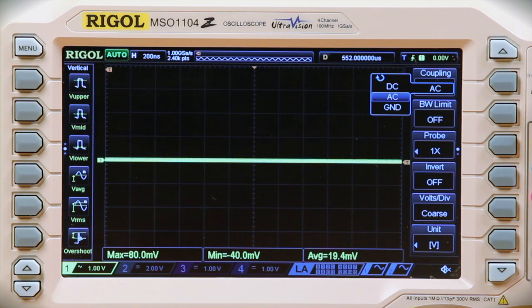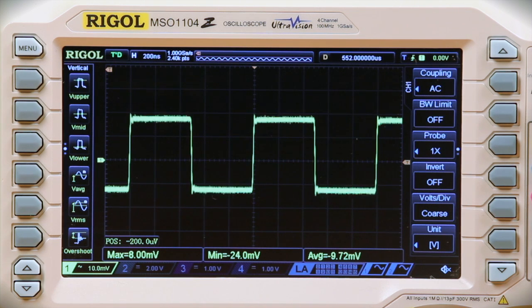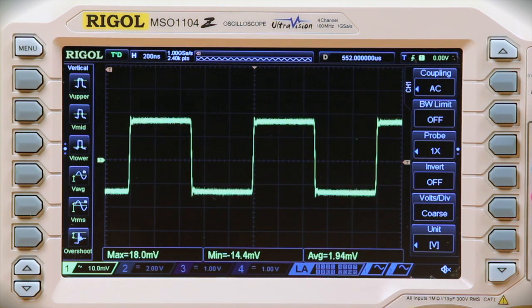AC coupling blocks the DC components of the signal, so the average of the waveform appears at ground. This makes triggering and aligning the signal much easier. Furthermore, the engineer can now zoom in further using the vertical scale.